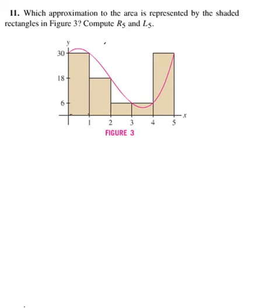On this problem they want you to first decide whether you're looking at the shaded area, which is R sub 5 or L sub 5. If you look at the first subinterval, you can't really tell because at the endpoint of 0 you have a height of 30, but also at 1 you have a height of 30. So let's look at the second subinterval.